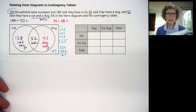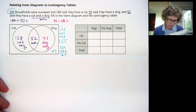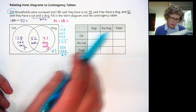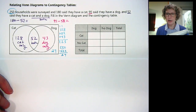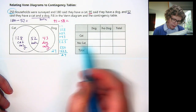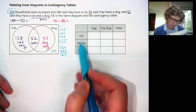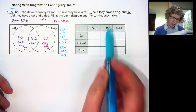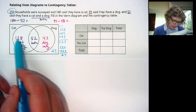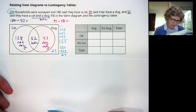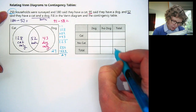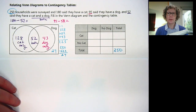Now let's take a look at what's called a contingency table. A table has rows and columns, so we can compare two different variables such as cat and dog. On the rows is whether someone has a cat or not a cat, and in the columns is whether they have a dog or not. We also have a total row and a total column. Right away we can say 250 is our grand total of all the people surveyed.